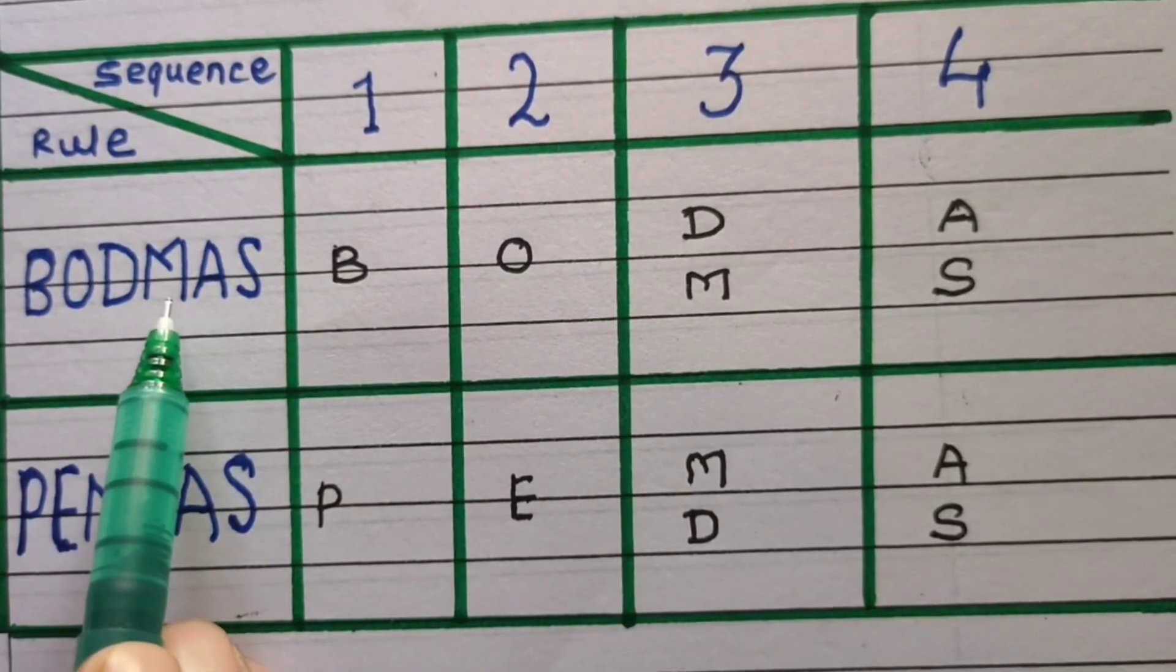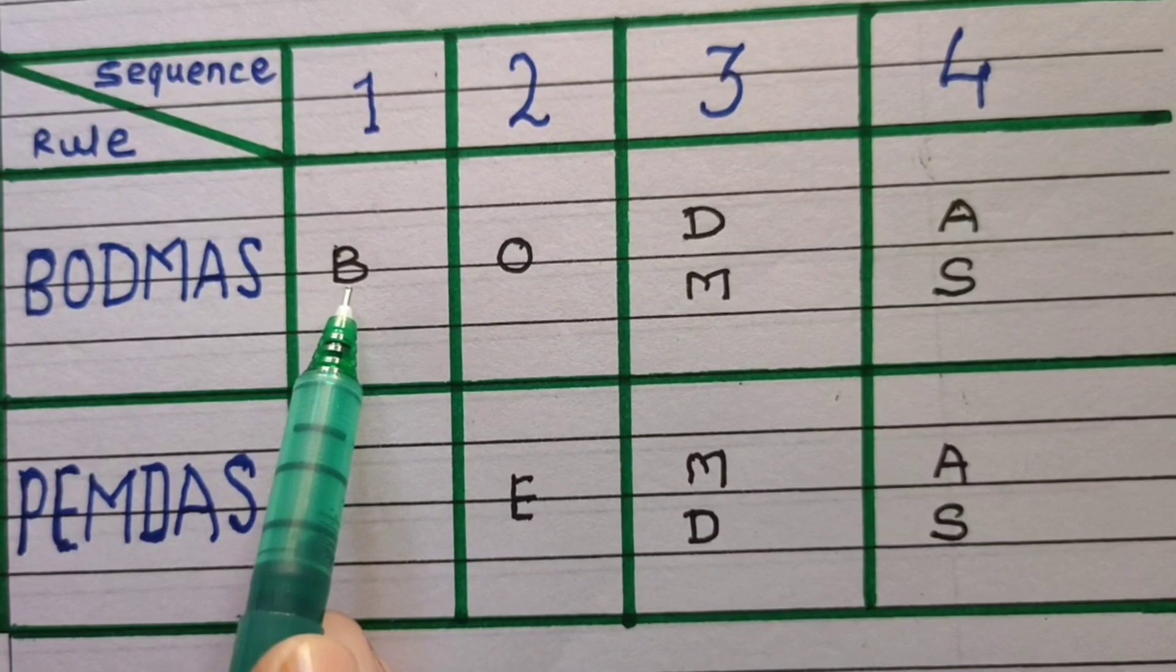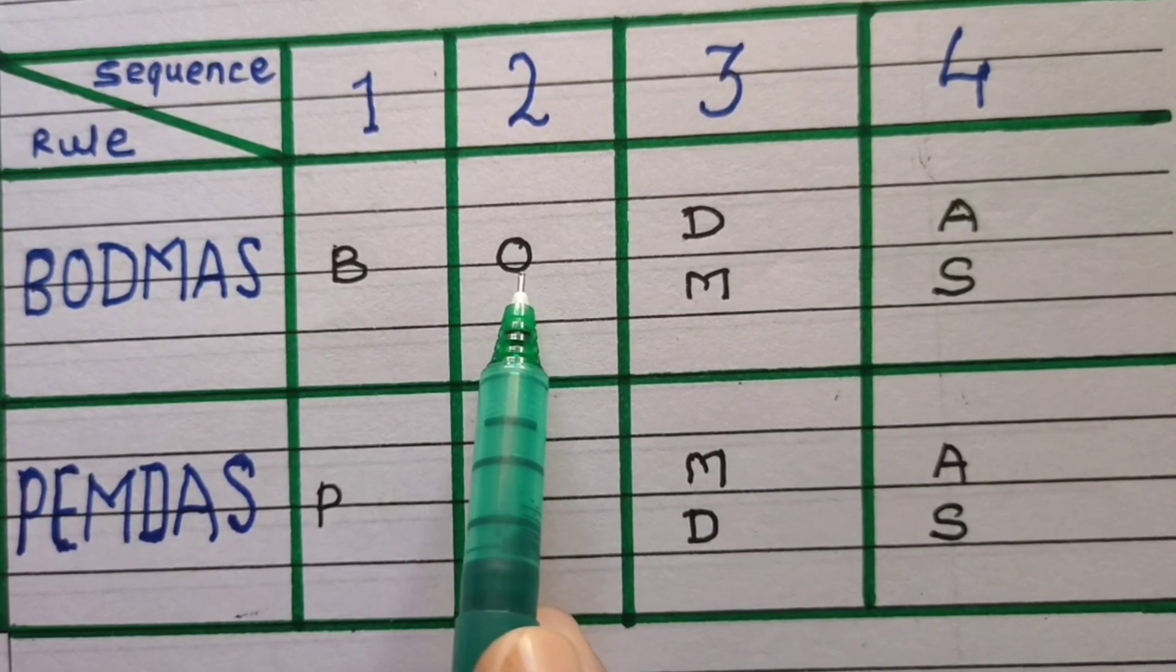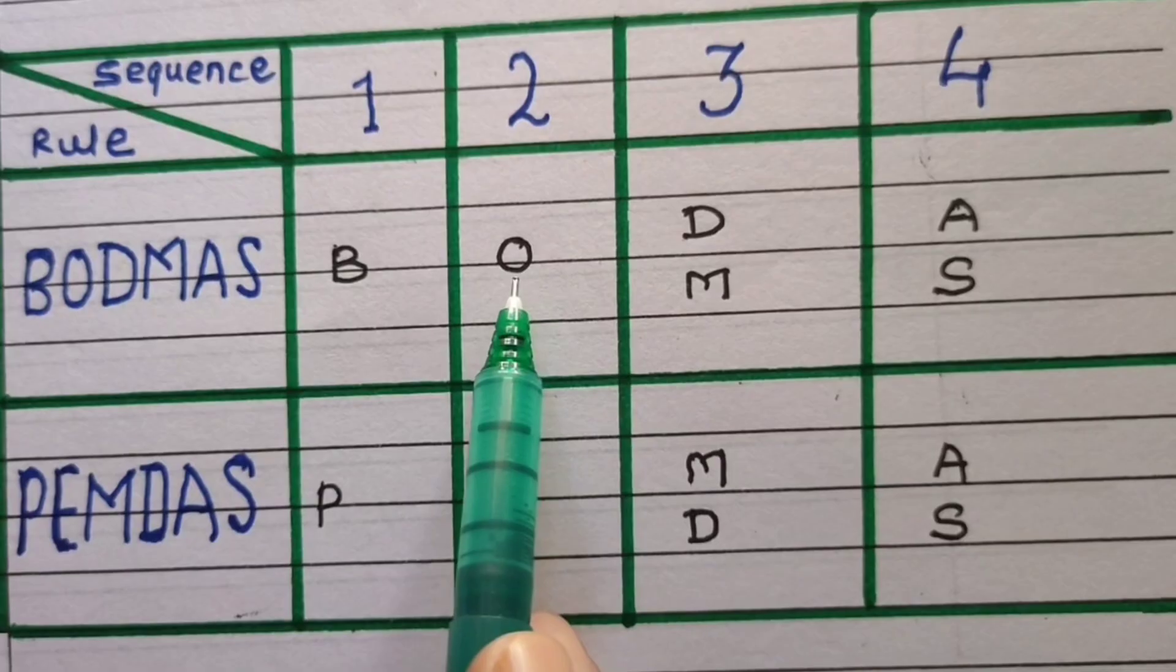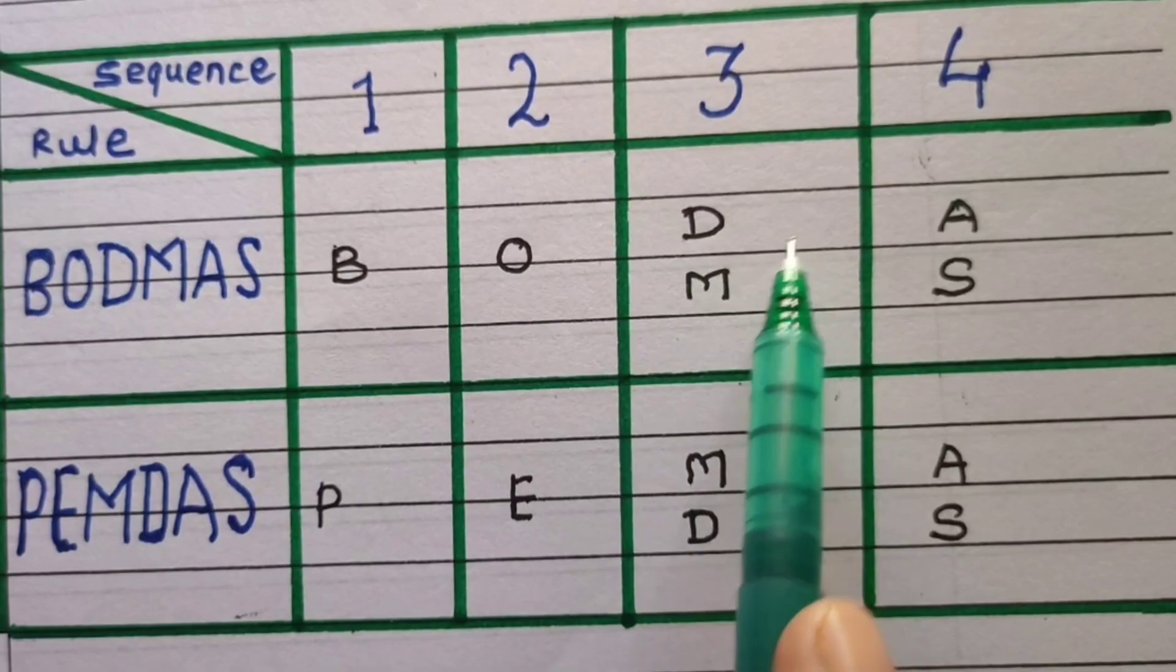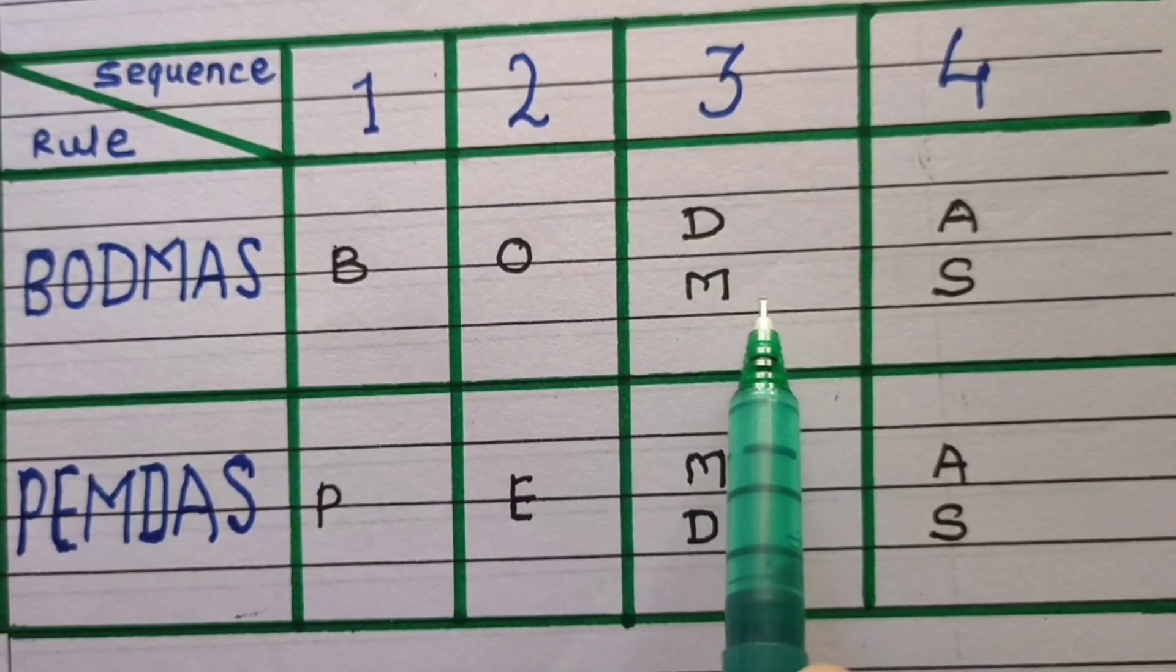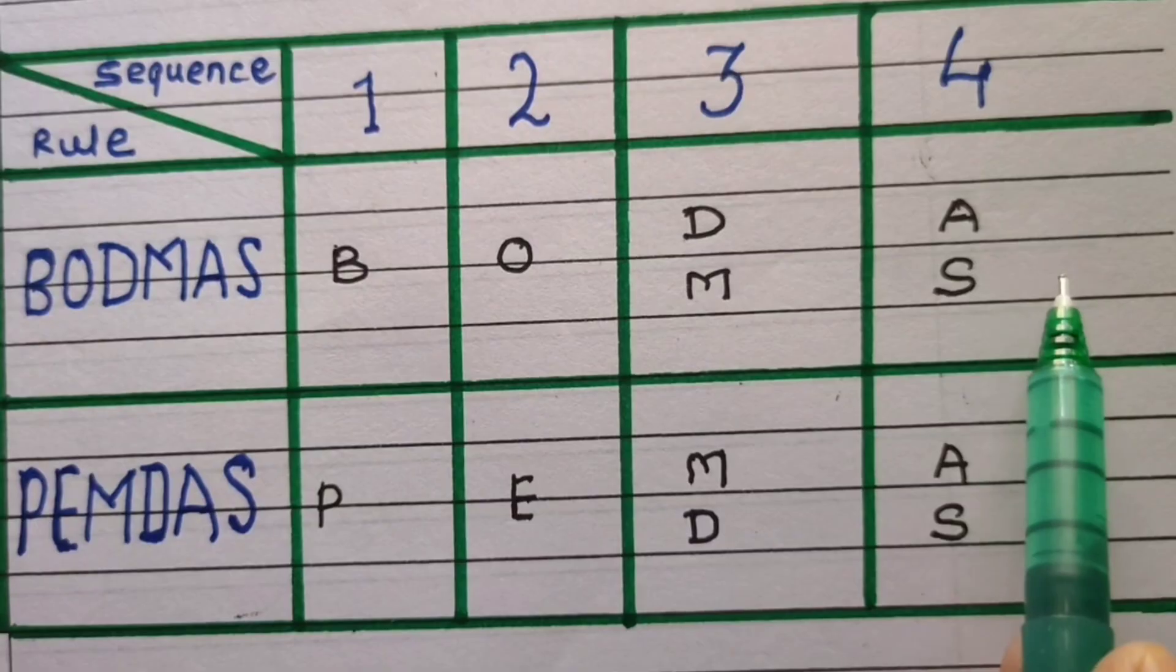This gives BODMAS rule and in this row PEMDAS rule. B stands for bracket, O stands for orders or exponents or indices or roots, square roots, nth roots. Then D stands for division, M stands for multiplication, A stands for addition and S stands for subtraction.